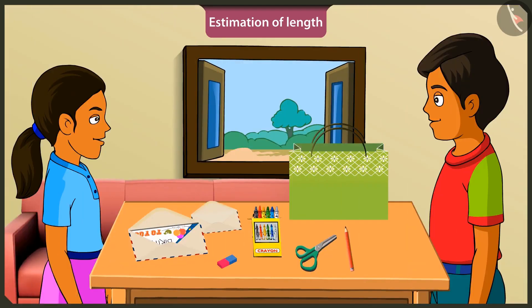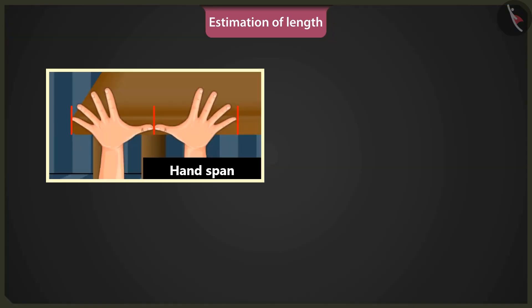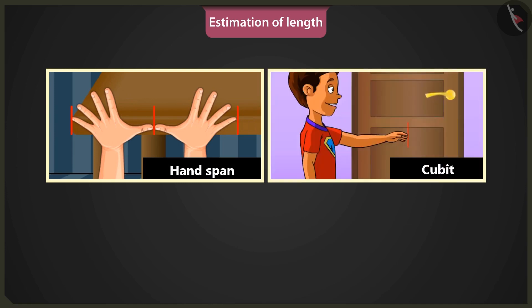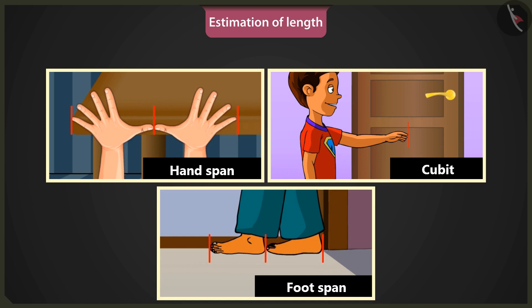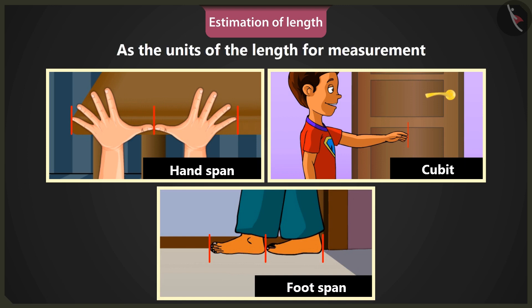Do you know, Mintu, when I went to my grandfather's house during the holidays, he told me that people during the old times used certain body parts to determine the length of objects. People used estimated measures of everything during those times. They used the length of palm — that is, hand span — the length of hand — that is, cubit — and the length of foot — that is, foot span — as units of measurement of length.